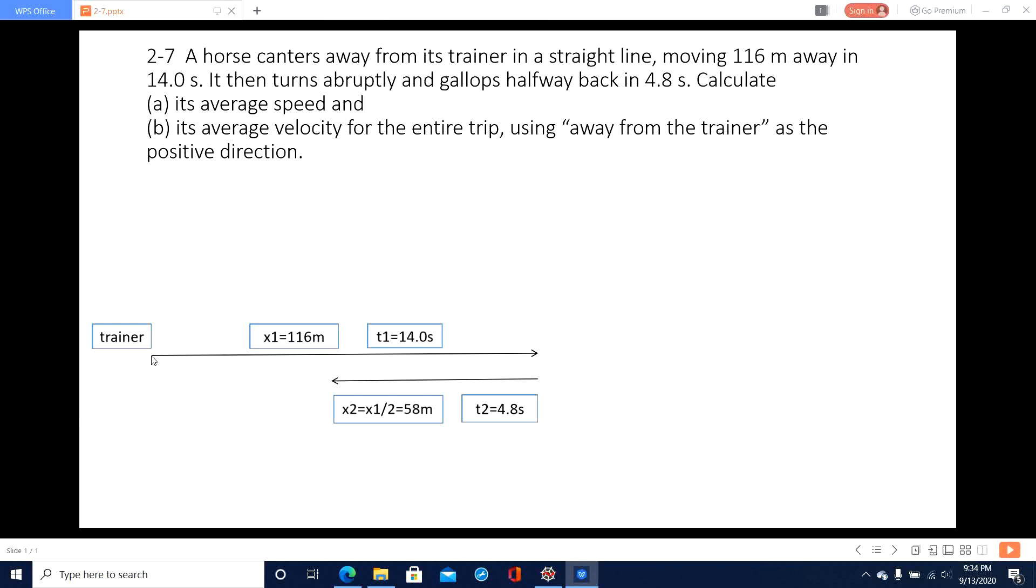First thing, from the trainer, it moves to x1, then it needs to plus x2, right? How much length it covered: x1 plus x2. And then when we consider velocity, it's displacement divided by time taken.